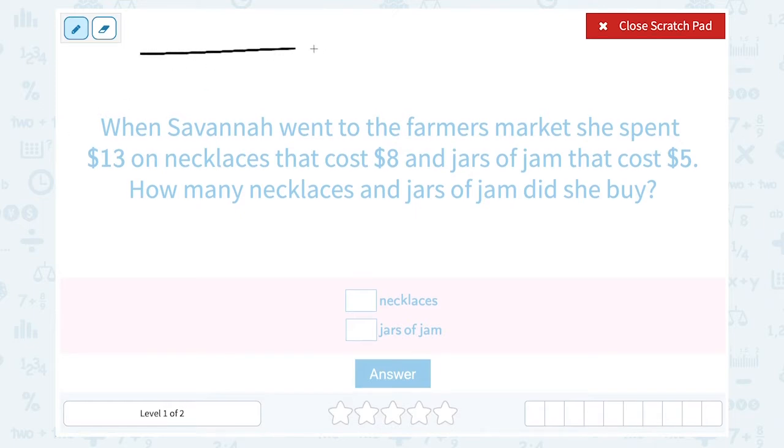So what I want to do is guess a combination of necklaces and jars of jam that I think might add up to $13. Now notice $8 and $5 each. She couldn't have bought too many because she only spent a total of $13. So I'm going to start with a really low guess, like maybe she bought one necklace and one jar of jam.